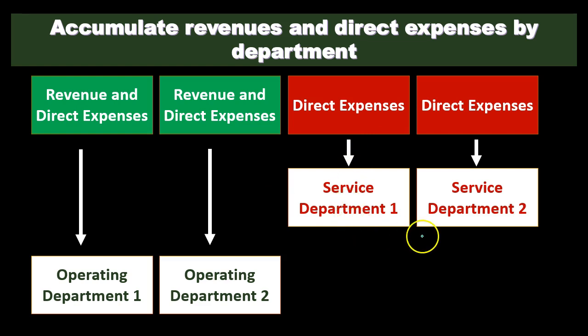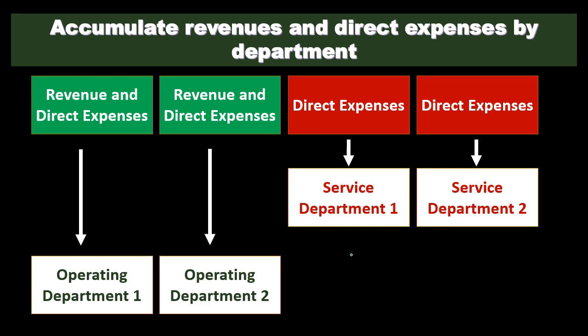Once we have finished these service departments and allocated all costs to them, we will take those total costs and then allocate them to the operating departments. But at this stage — the allocation of the direct expense stage — we are allocating those direct expenses that are applicable, whether we're talking about the operating departments or service departments. Service departments, of course, only have expenses, not revenue.